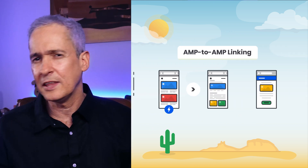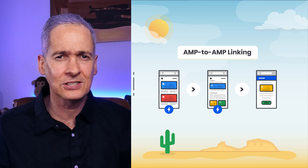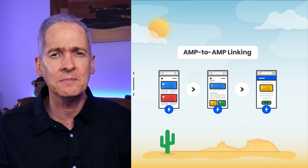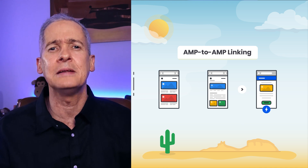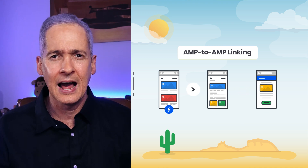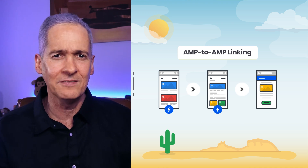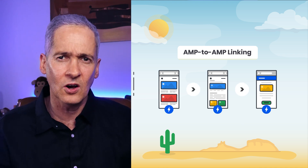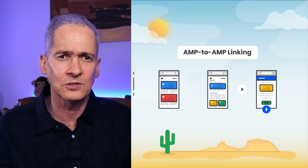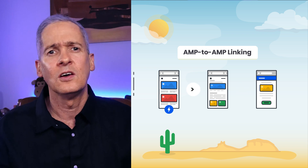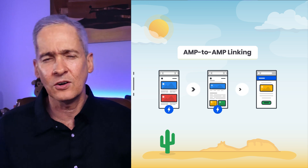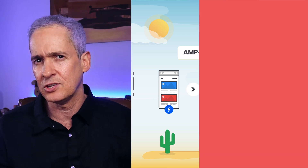Also, together with mobile redirection, the plugin enables AMP-to-AMP linking, allowing your mobile visitors to stay on an AMP version of your site once they land on any AMP page.